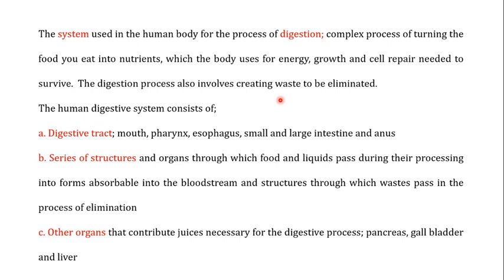The human digestive system consists of different components, and you can broadly classify them into three types. The first is known as the digestive tract, which includes the mouth, the pharynx, the esophagus, the small intestine, the large intestine, and the anus. The second sub-component consists of a series of structures and organs through which food passes during processing into absorbable forms into the bloodstream, as well as structures through which waste passes during elimination.